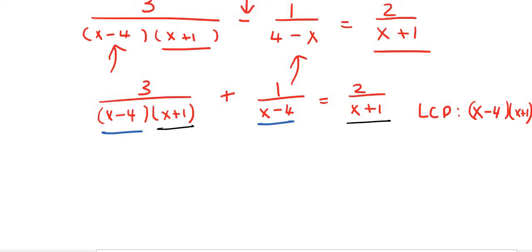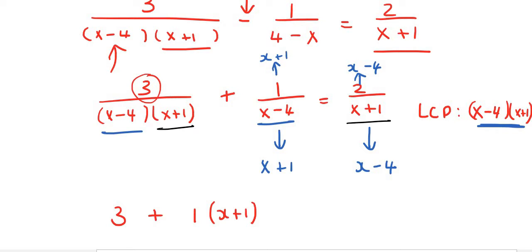So this means that this part we don't need to do anything because it already has the entire denominator. This x minus 4 would still need to be multiplied with x plus 1, because it doesn't have the whole entire denominator. And then this one would still need to be multiplied by x minus 4. And then what you do to the bottom you must do to the top. So this is going to give us 3, because this 3 we're not doing anything with that, plus 1 times by x plus 1. See how it's being multiplied by x plus 1. Equals to 2 multiplied by x minus 4.